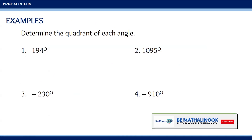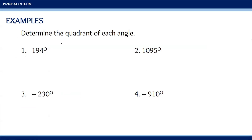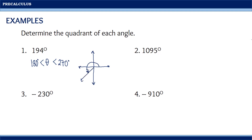Let us consider the following examples. Determine the quadrant of each angle. For the first one, we have 194 degrees. Notice that 194 degrees is greater than 180 degrees but less than 270 degrees. If we draw this given angle in standard position, notice that it is greater than 180 degrees. Therefore, we will go beyond 180 degrees but will not reach 270 degrees. From the illustration, we can see that 194 degrees lies in the third quadrant.